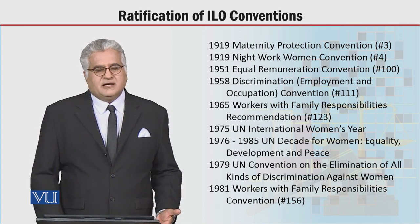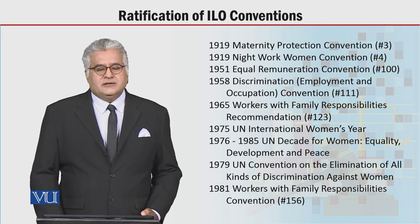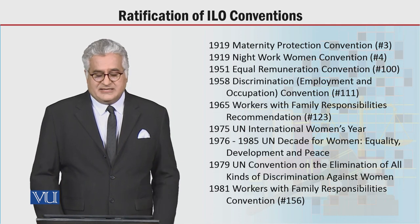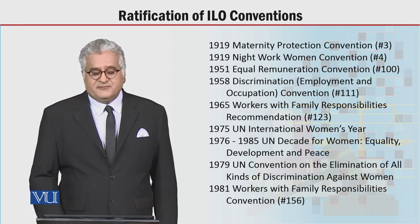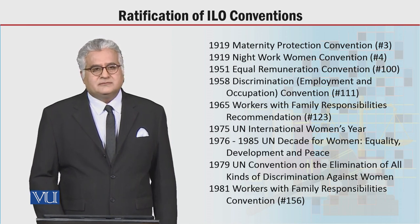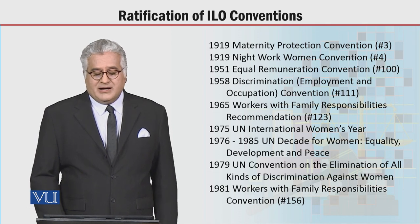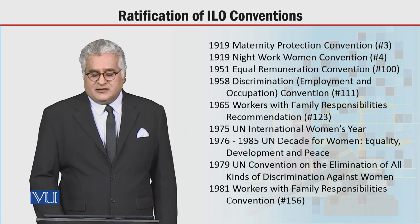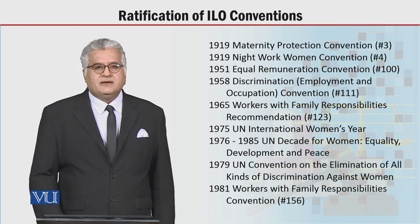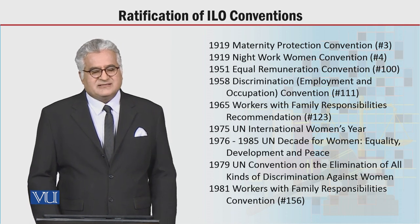There are many more conventions that the ILO has enacted to dispense social justice, promote peace, and create balance among the striving classes. In 1919 the Maternity Protection Convention was signed; in 1951 the Equal Remuneration Convention; in 1958 the Discrimination Convention; in 1965 the Workers with Family Responsibilities Recommendation; and in 1975 the UN International Women's Year. There are as many as 39 conventions which are very important from a civilization point of view and to strike a balance between the striving classes in a state.